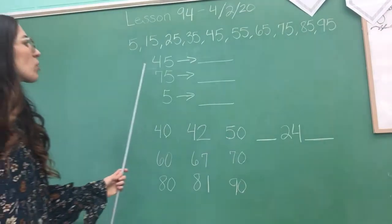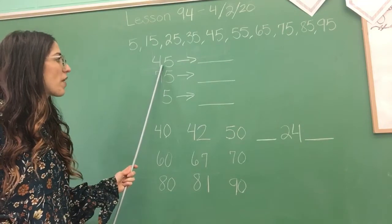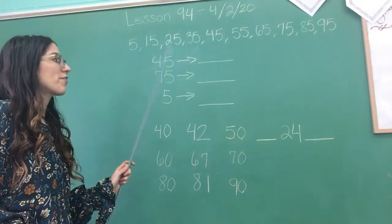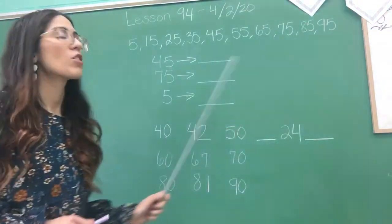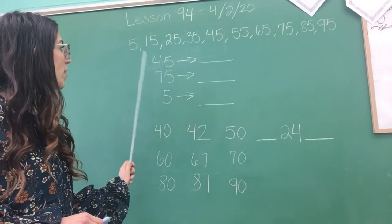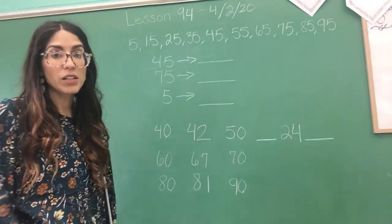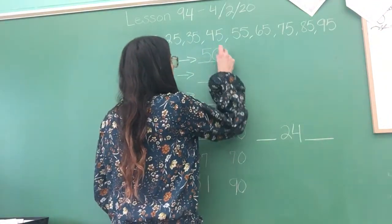For example, when we have 45, see it's in the middle, right? So 45 is in the middle of 40 and 50. Just like I explained. So are we going to round 45 to 40 or 50? What's 45 going to be rounded to? It's closer to, that's right, 50. So we're going to put 50.